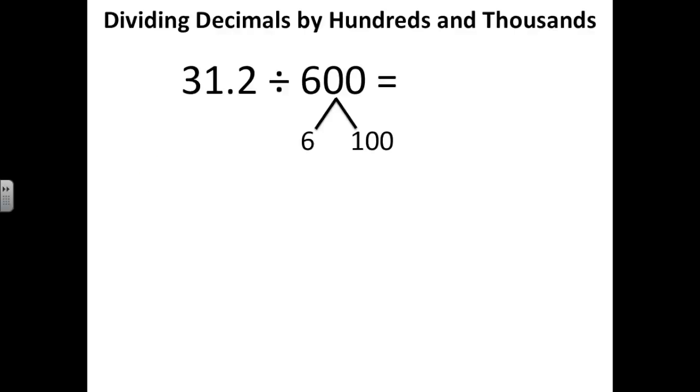And we're going to complete it in two steps. Our first step is going to be to divide 31 and 2 tenths by 6. So they're wanting us not to estimate. They're wanting us to get the exact answer here. We know how to divide a decimal by a one digit whole number. So you can either solve it in your head or you can actually write it out to the side.